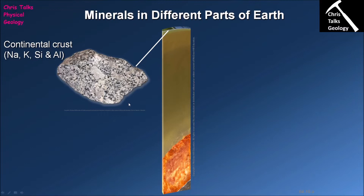This is going to correspond to section 4.10 of your textbook. If we look at this diagram here we can see a slice through the earth. At the top we have the crust, which consists of the continental and oceanic crust. Underneath that we have the mantle, and underneath the mantle is the core. Each of these layers has its own distinct chemistry, which produces a distinctive mineral assemblage.